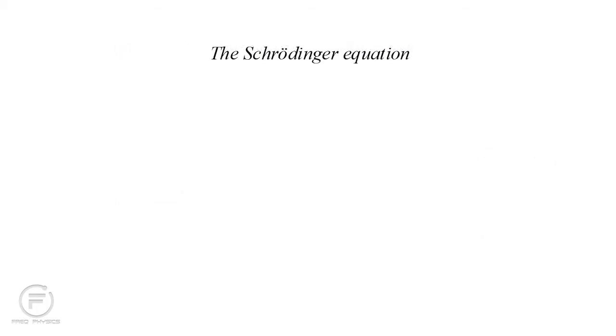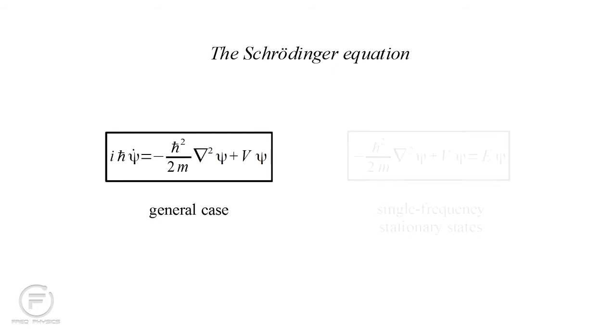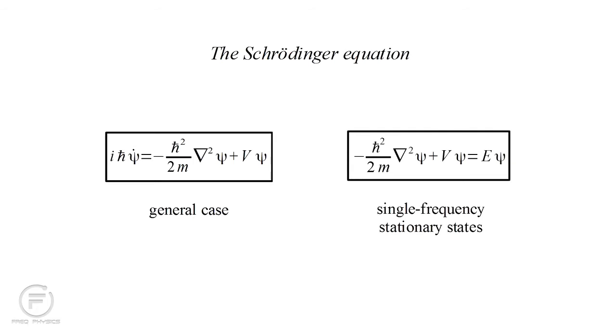So we have two forms of the Schrödinger equation. The form for the general case is used when we need to describe dynamic situations, such as an electron traveling through the double slit experiment. The single frequency form is used to calculate the energy levels of atoms and the chemical bonds in molecules. In the next part, we'll look at animations of Schrödinger equation's solutions to get some idea of what all this math actually says about how the world works at atomic scales.